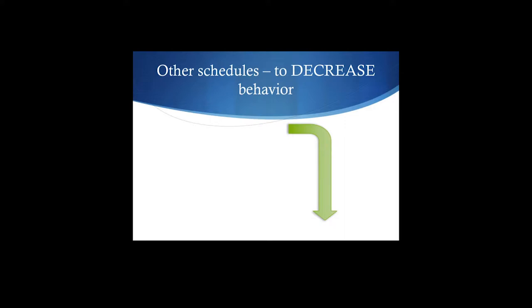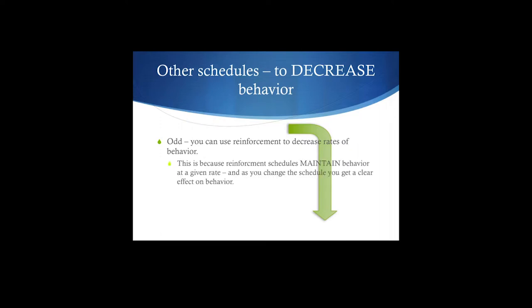Here's where stuff gets weird — there's always more to the story. We're actually going to use reinforcement schedules to decrease behavior. This is odd because the definition of reinforcement is to maintain or increase a particular behavior. What we're going to do now is use reinforcement to actually slow a behavior down — reinforcing different rates of behavior. Reinforcement schedules will maintain behavior at a particular rate, so you can change that schedule and get a clear effect on behavior. You're still reinforcing; you're not punishing.